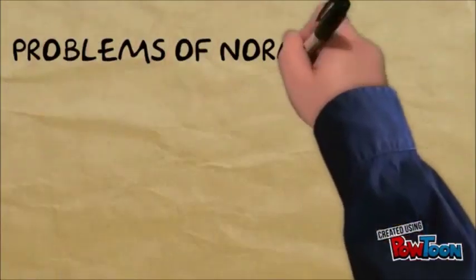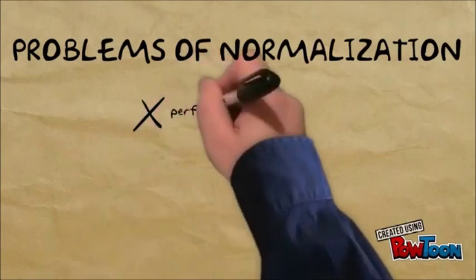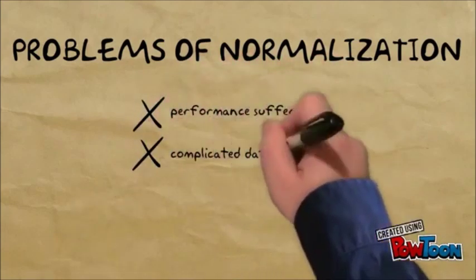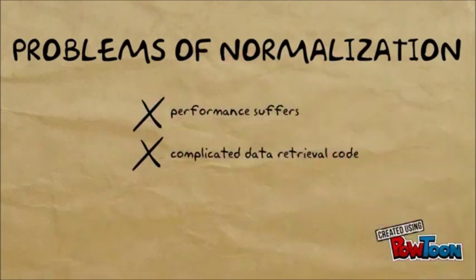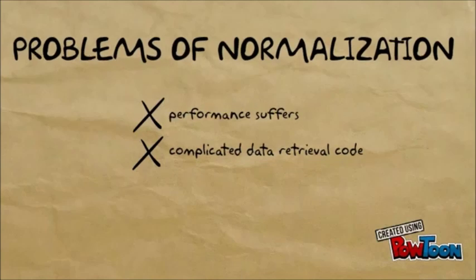However, normalization is not without its problems. Normalized databases will typically require more tables to access when retrieving data for a single entity. This means more lookups, and therefore, slower retrieval transactions. In addition to that, we will need to manually compose rows from multiple tables in order to retrieve that entity into a usable form. This means more complex lookup code.